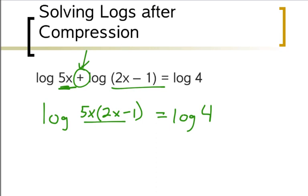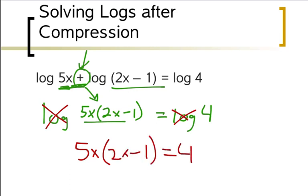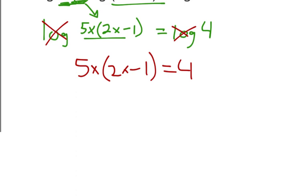The plus sign made there be multiplication, they both went on the top. Now what happens is I can cross out my logs, and I'm left with 5x times 2x minus 1 equals 4. Now, I need to distribute and solve for x, so that's going to give me 10x² minus 5x equals 4.